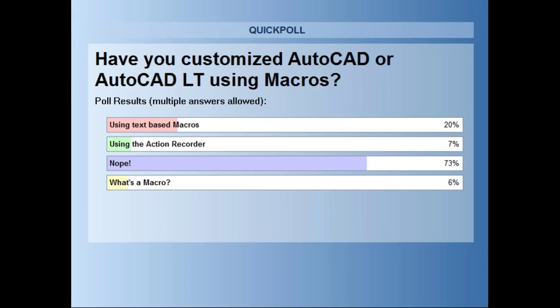If you aren't aware of what a macro is, it's a way of being able to use multiple commands and functions in one command. For example, creating a layer, assigning a color and line type, setting it current, and maybe inserting a block on that layer — a lot of steps. With a macro, you do it one time and then run it. The Action Recorder does simplify that dramatically. So let's see how this works — ready, set, action — as I turn it over to Sarah.